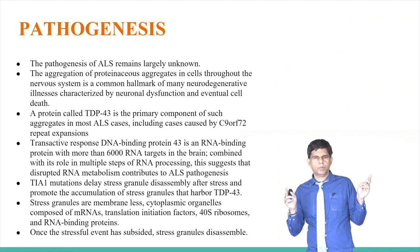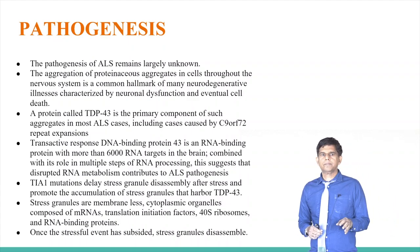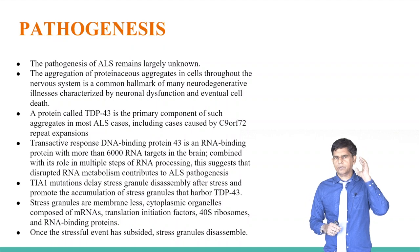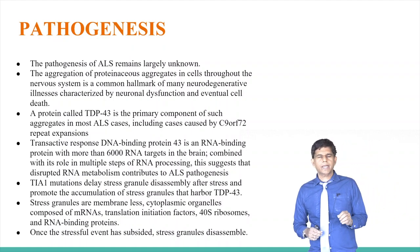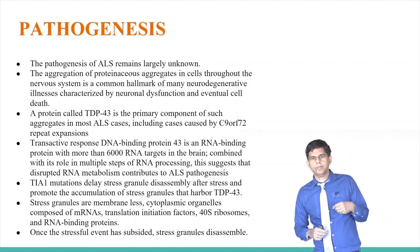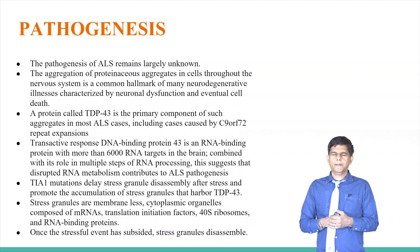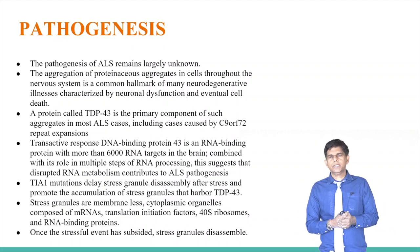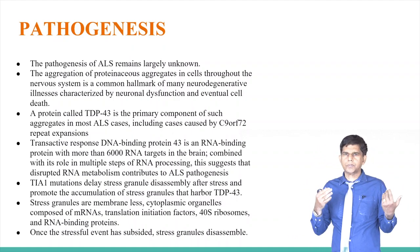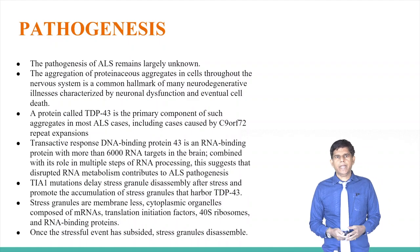For pathogenesis, the key word to remember is TDP-43 — the transactive response DNA binding protein — which plays a very important role in the neuronal system. It has around 6,000 RNA targets in the brain and is involved in RNA processing and protein synthesis. When there is a problem with TDP-43, due to mutation or environmental causes, significant neuronal degeneration and disruption of neuronal homeostasis occurs, leading to the disease.